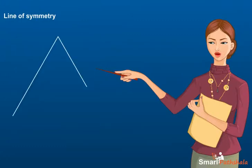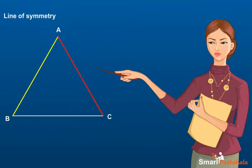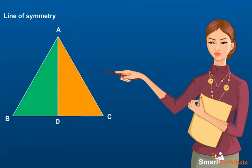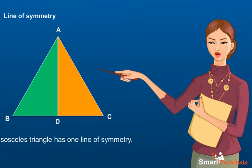Consider an isosceles triangle ABC. It has two sides AB and AC of equal length. The line AD divides the triangle into two congruent parts. So, an isosceles triangle has one line of symmetry. It is not necessary that one shape can have only one line of symmetry.